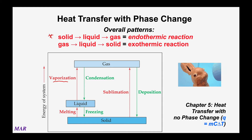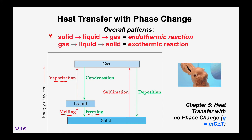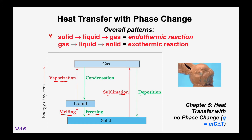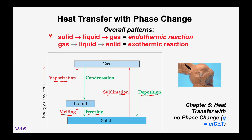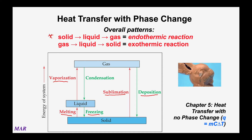Solids going to liquids is referred to as melting, and liquids going to solids is of course freezing. There's also solids going to gas — that's sublimation, like when we saw iodine crystals turn into a gas. Technically, deposition is the term used for going from a gas back to a solid, so if you turn the iodine vapor back into solid iodine, that would be deposition.